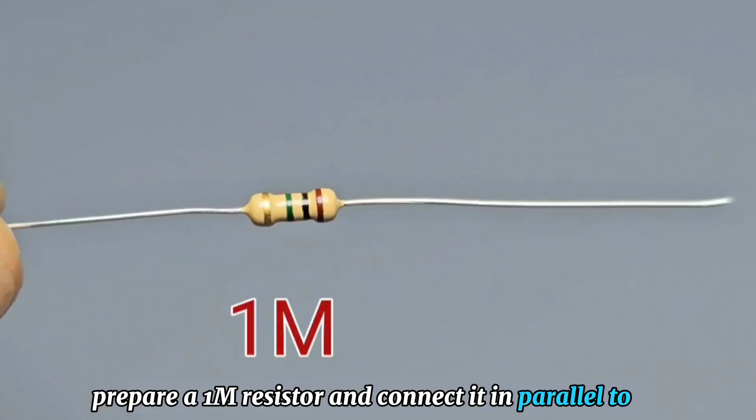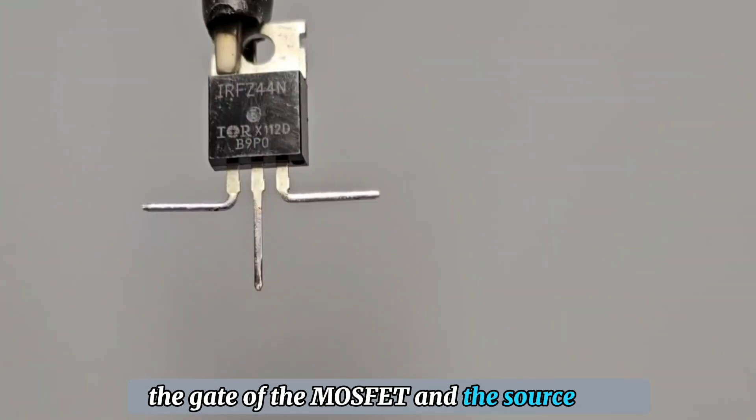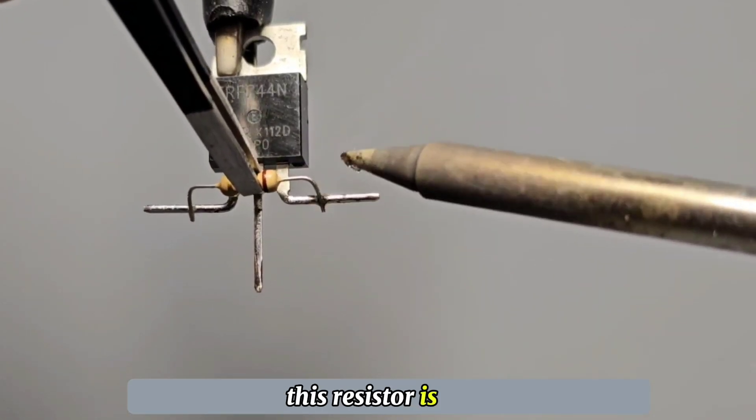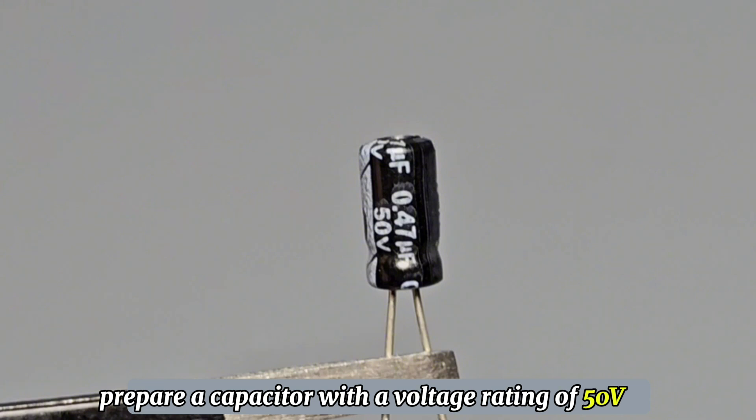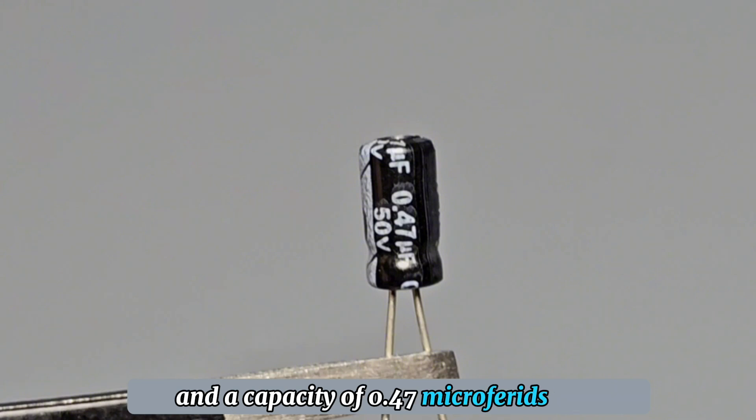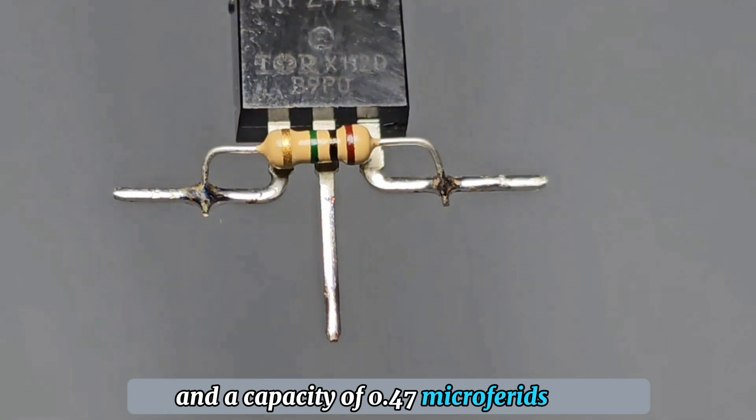Prepare a 1M resistor and connect it in parallel to the gate of the MOSFET and the source. This resistor is the pull-down resistor of the gate of the MOSFET. Prepare a capacitor with a voltage rating of 50V and a capacity of 0.47 microfarads.